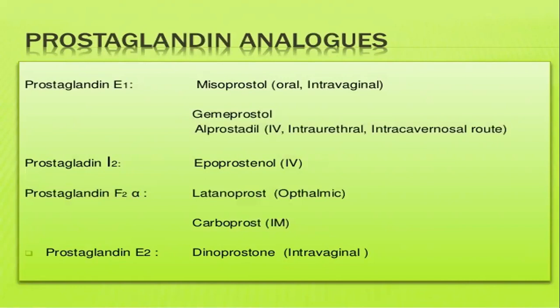Prostaglandin analogs include PGE1 analog misoprostol, which can be given intravaginally or orally. Gemeprost is also available. PGI2 analog is epoprostenol. PGF2 and PGE2 analogs are also available. These drugs are used for gynecological procedures and promotion of labor, and prostaglandins also help prevent gastric ulcers by protecting the gastric lining.